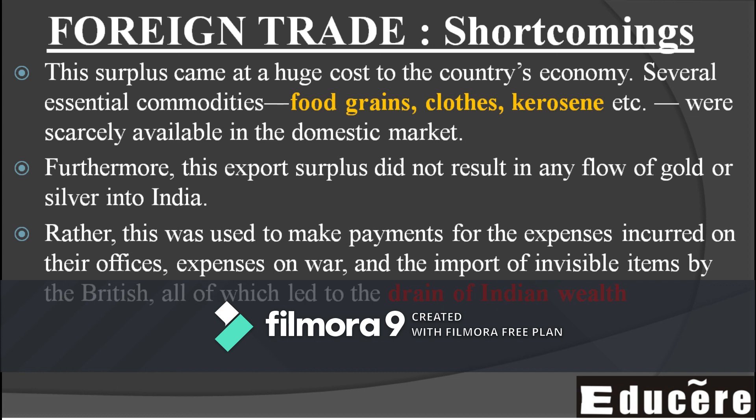The foreign reserves — gold, silver, and currency — that came from exports ultimately left India rather than contributing to its development. Britain had a monopoly on this. The money was used to fund wars like World War 1 and World War 2. Additionally, invisible items were imported, and all of India's export surplus ultimately drained out. This leads us to the theory of the Drain of Indian Wealth.